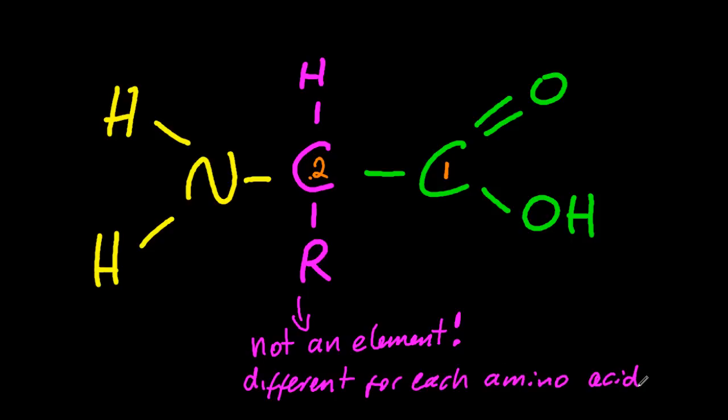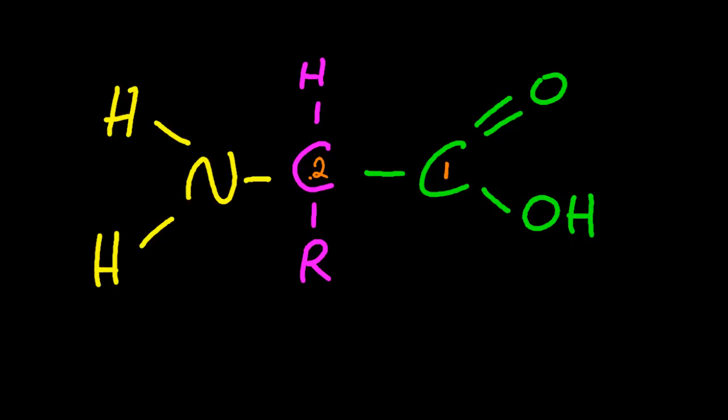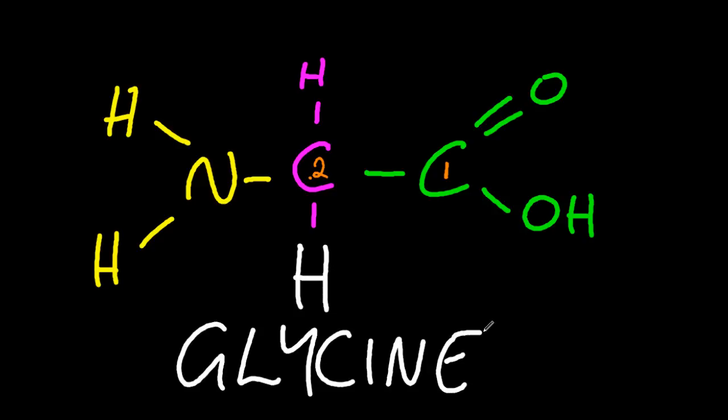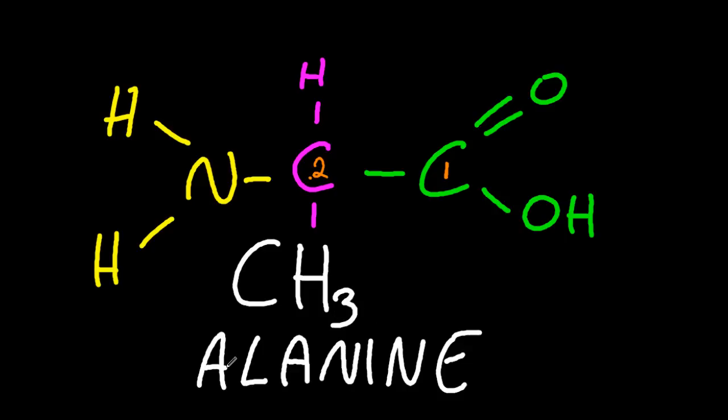Let's look at a few examples. If R is just simple hydrogen, then that's called glycine. If R is the methyl group, that's called alanine. You don't have to learn these. It's just different examples.